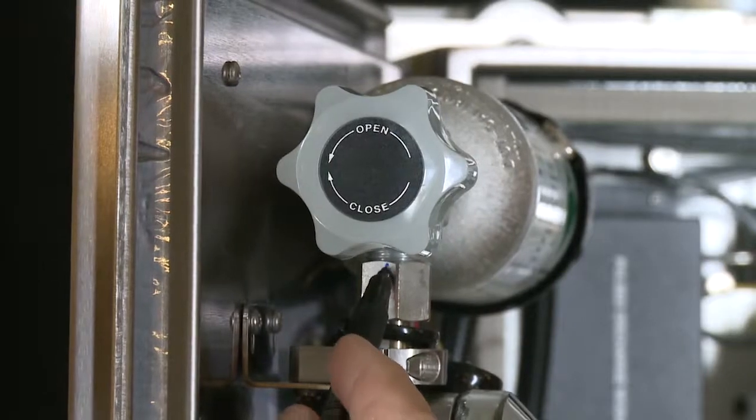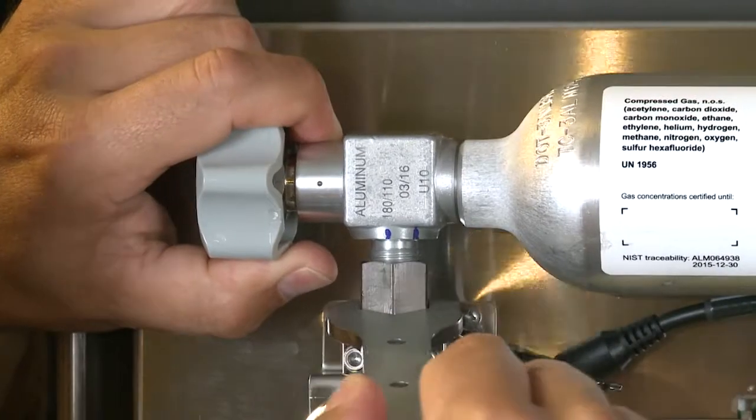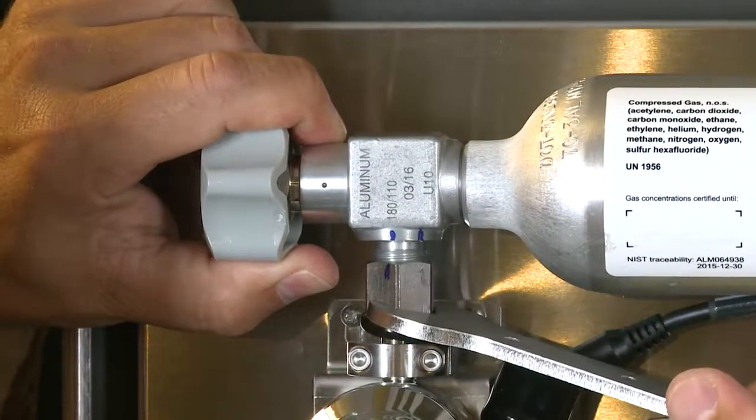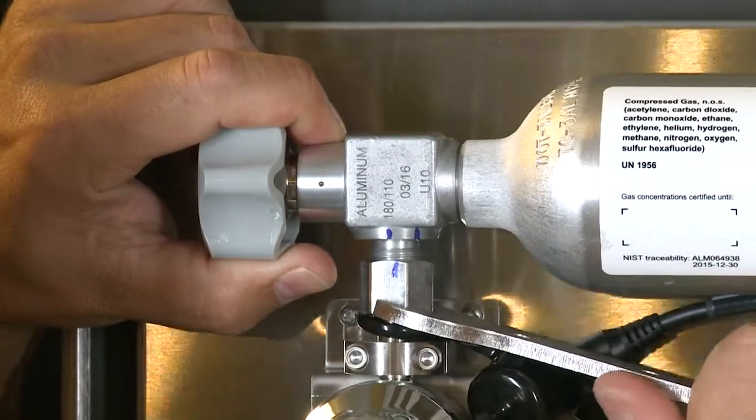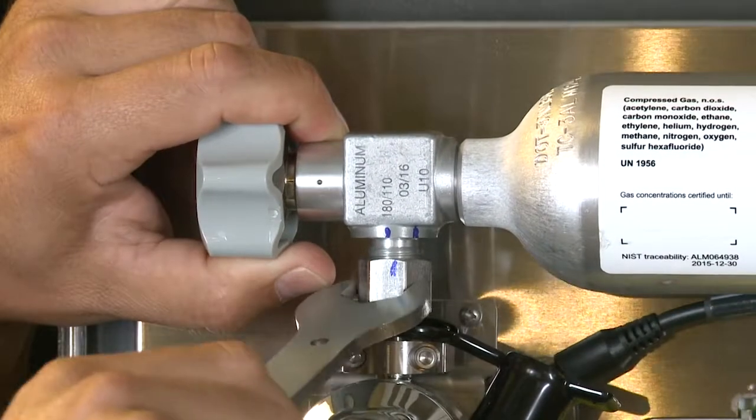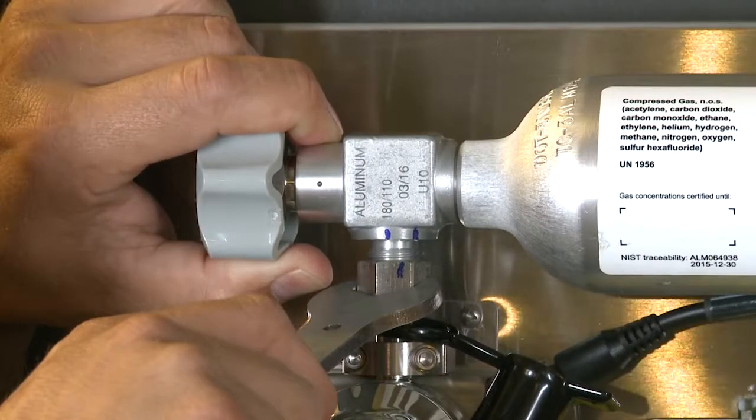Then, tighten the nut perfectly. Between one-quarter and three-eighths of a turn. This will deform the PCTFE gasket to form a leak-tight seal.